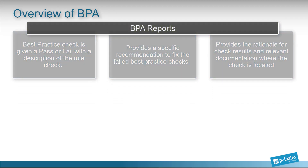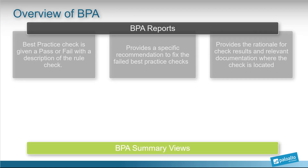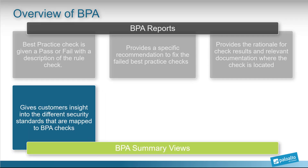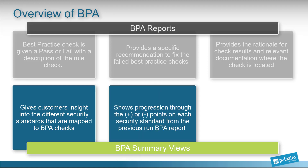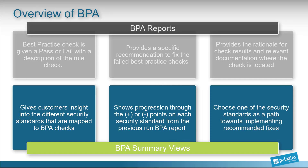The BPA summary views provide customers with insight into the different security standards that are mapped to BPA checks, and shows progression through the plus or minus points on each security standard from the previous BPA report run. Using this information, customers can share the report findings with executives and choose one of these security standards as a path towards implementing recommended fixes.